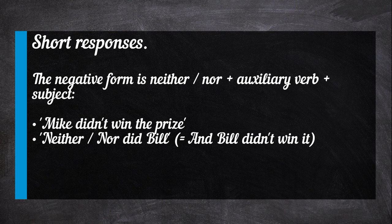The negative form is neither nor plus auxiliary verb plus subject. For example: Mike didn't win the prize. Neither nor did Bill — equals: and Bill didn't win it.